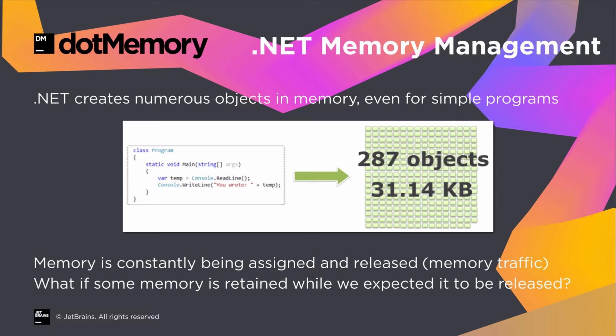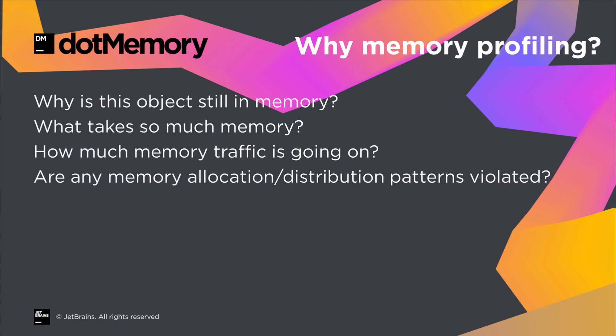Objects will reference each other, update those references, set them to null, and then lose these references and so on. Now what if this happens too often? Does it impact our application's performance? And what if we expect an object to be released from memory, but it isn't? That's what we can use a memory profiler for.